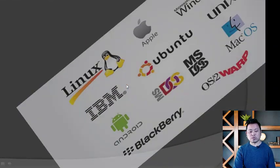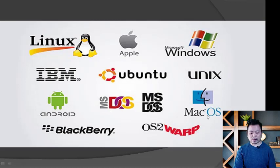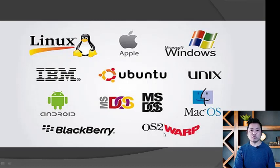Commonly used operating systems include Linux, Apple, Windows, IBM, Ubuntu, Unix, Android, MS-DOS, Mac, Google, Blackberry, OS2, and Raspberry. These are the commonly used operating systems which are basically used today.